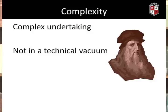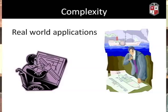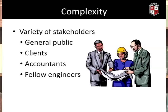I want to discuss several characteristics of engineering. The first is complexity — engineering is a complex undertaking. There's a misconception that engineering takes place in a technical vacuum, that engineers are sequestered in a laboratory and only interact with other engineers. But in fact, engineers design products and even services for real-world applications, and in the process interact with a variety of stakeholders — the general public, clients, accountants, purchasing managers, and their fellow engineers.